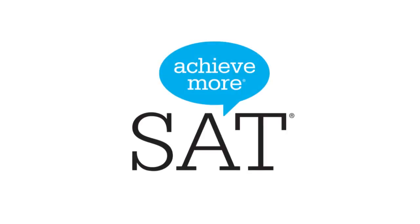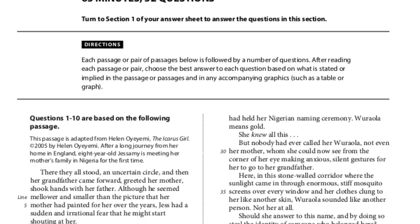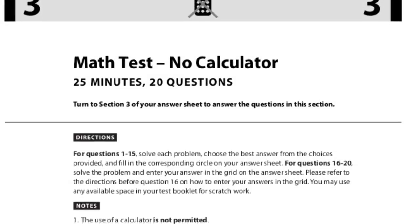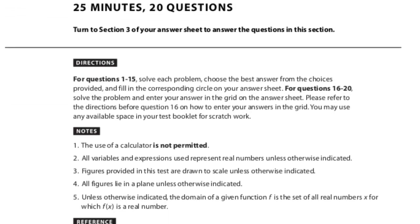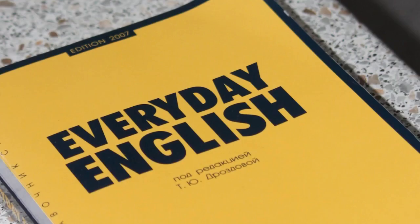The SAT has two major portions: evidence-based reading and writing, and mathematics. Each portion accounts for 800 points, which tally to a total of 1,600 points.